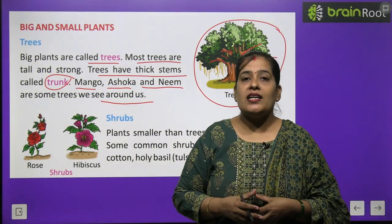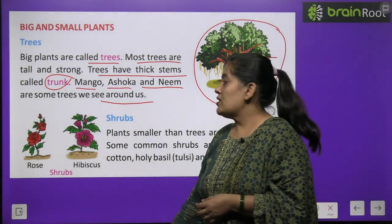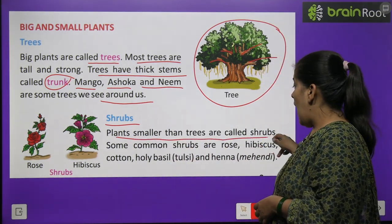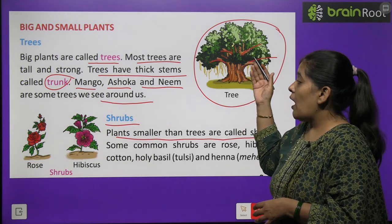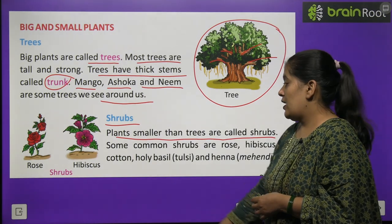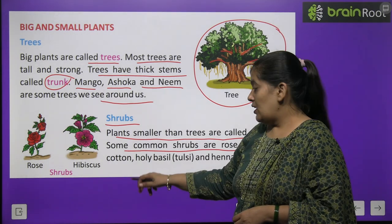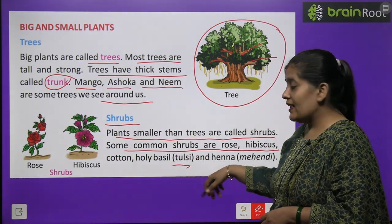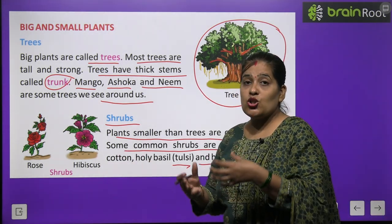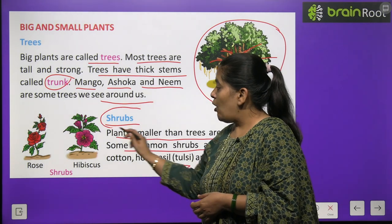Now we will learn about shrubs. Shrubs क्या होते हैं? Plants smaller than trees are called shrubs. वृक्षों की अपेक्षा जो छोटे पौधे होते हैं उन्हें हम shrubs कहते हैं। Some common shrubs are rose, hibiscus, cotton, holy basil जिसे हम tulsi कहते हैं, and henna यानी mehendi। गुलाब, hibiscus, cotton, mehendi और tulsi — ये shrubs के उदाहरण हैं। ये पौधे पेड़ों की अपेक्षा छोटे होते हैं।